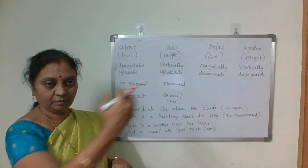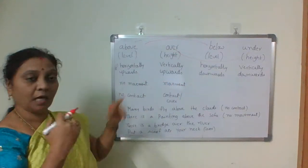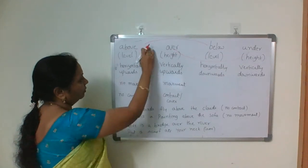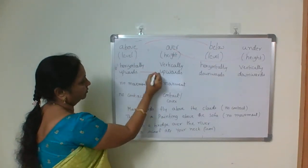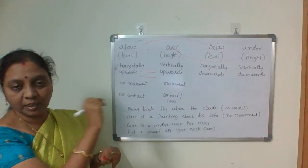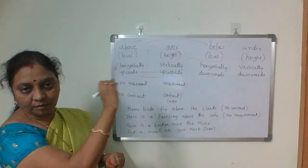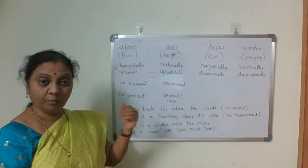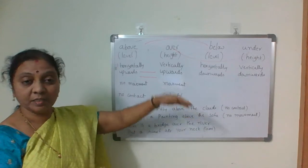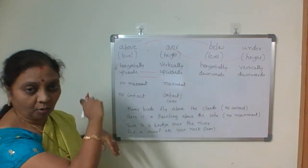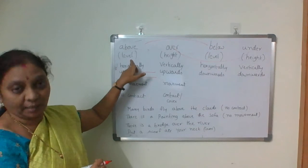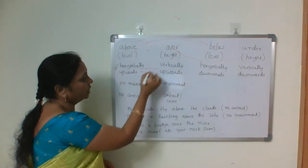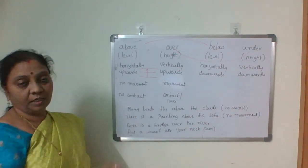'Above' talks about horizontally upwards — it's talking about level, like sea level or performance level. If the performance is above average, that's horizontal — it is talking about level horizontally upwards. The other one, 'over', talks about height — vertically upwards. For example: 'There is a fan over my head.' — the position is height-wise, vertically upwards.